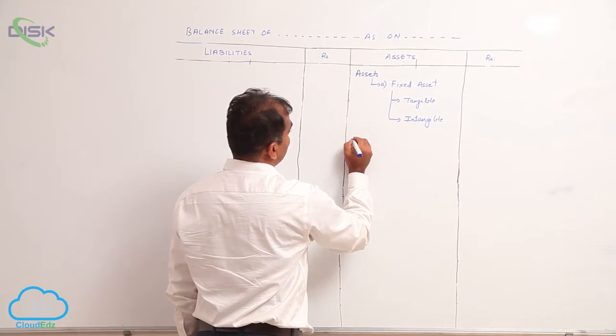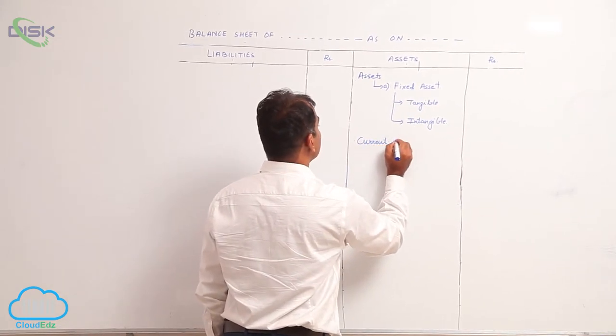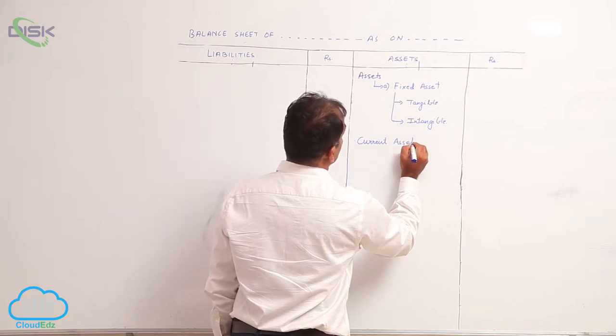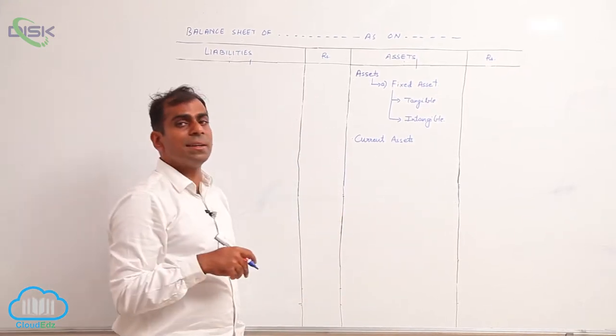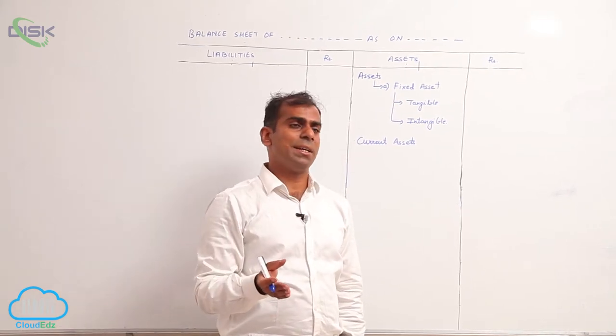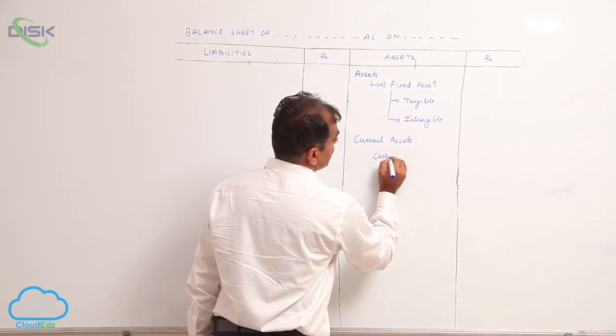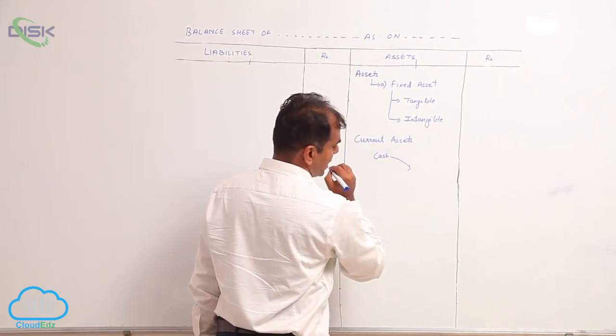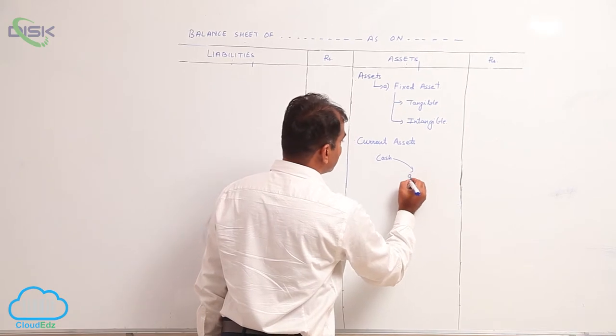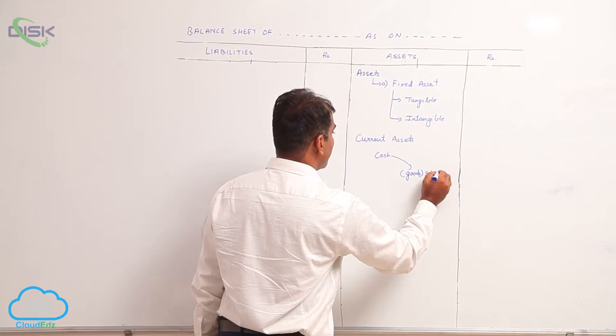Then you also have assets which are called current assets. Current assets are those assets or resources which can be reconverted into cash within one financial year. The most important current asset is cash. Suppose the current asset cash is converted into goods, usually represented by stock.